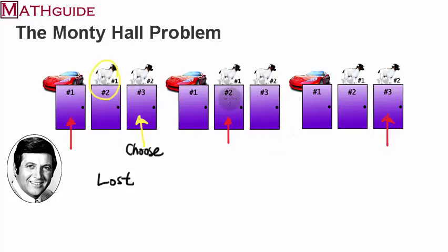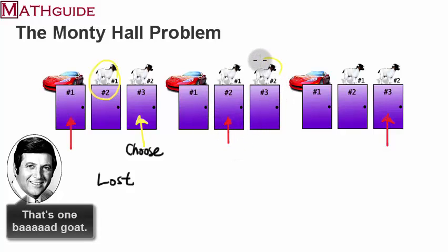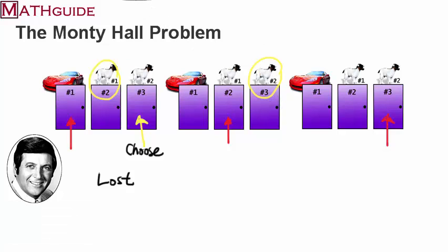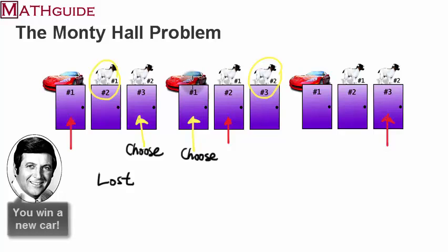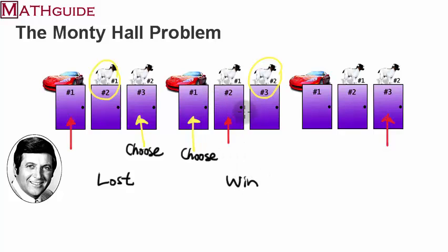Let's try the other scenario. You chose a door that happened to have a goat behind it — you don't know that yet. Monty opens up the other goat door and says: 'Good thing you didn't choose door three. Do you want to switch your choice?' And you say yes, because you're using the always-swap strategy. You say: 'Give me door one.' He opens it up, and to your satisfaction, you get the winning item — the car. You win! You go home with a nice sports car.